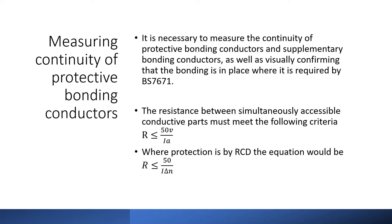The resistance between simultaneously accessible conductive parts must comply with the following formula. So that is the resistance being less than 50 volts divided by Ia. Now Ia is the minimum current required to operate the protective device within the disconnection time and that can be found from the time curve charts. Where protection is by an RCD the equation would become 50 volts divided by I delta N. So for a 30 milliamp RCD it would be 50 divided by 30. This is done to limit the touch voltage.